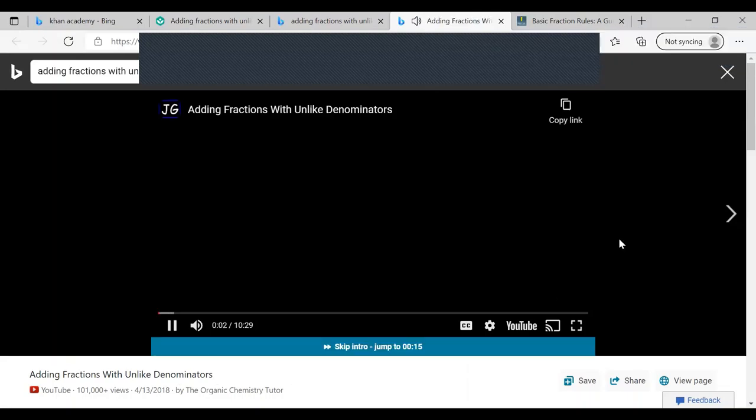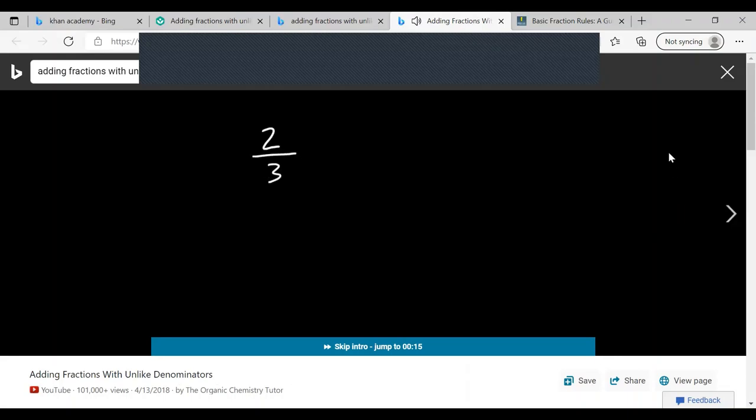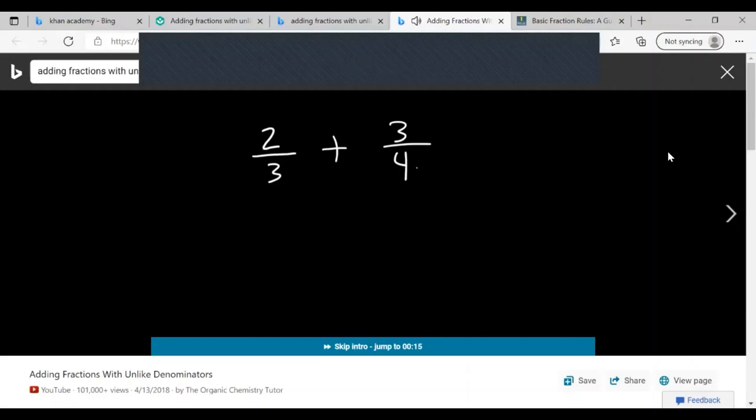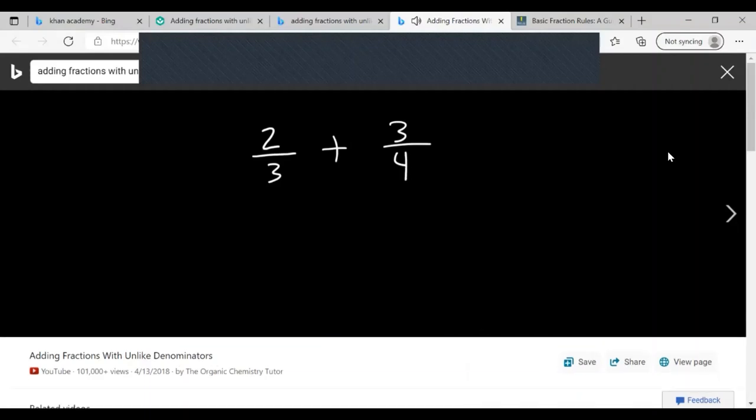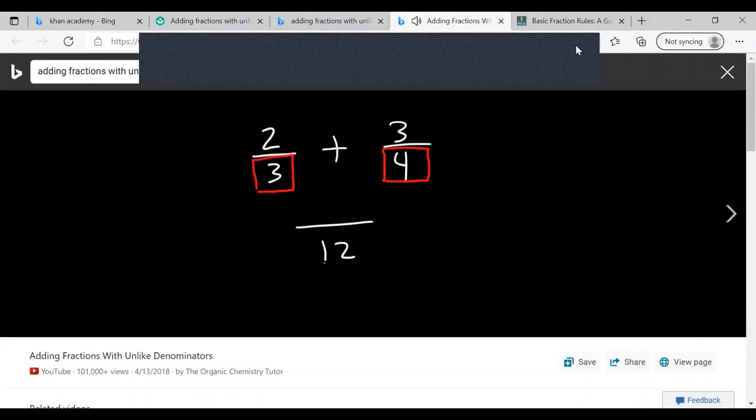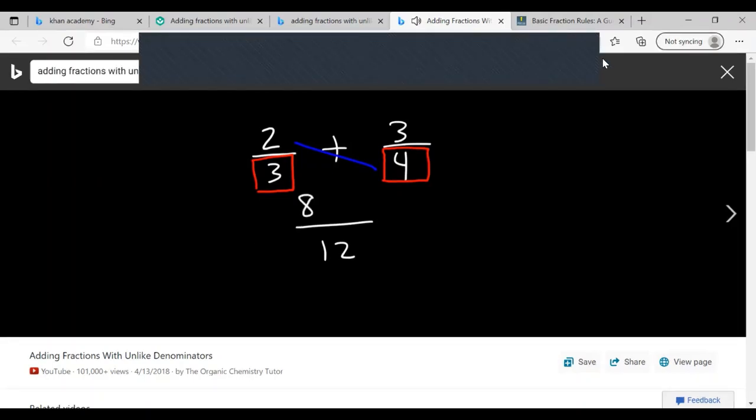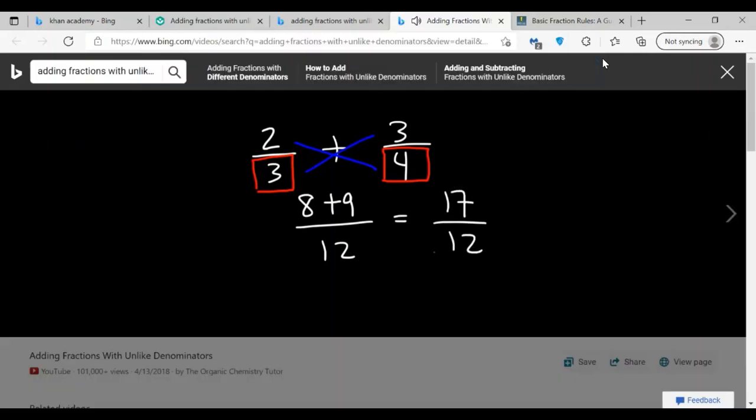In this video we're going to talk about how to add two fractions. Let's start with this example: two over three plus three over four. The first thing you do is multiply the denominators—three times four is twelve. Then cross multiply: two times four is eight, and three times three is nine. Add eight and nine to get seventeen. So the answer is 17 over 12 as an improper fraction.